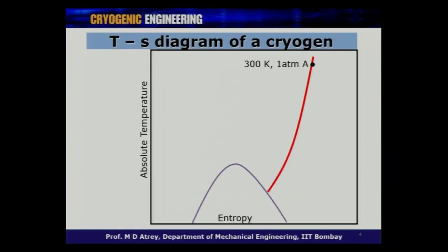Every gas can be represented on a temperature-entropy (T-S) diagram. On this diagram, the x-axis is entropy and the y-axis is temperature. You may have seen the pressure-enthalpy diagram, but the T-S diagram is what we normally deal with. Imagine you are at 300 Kelvin — room temperature, 27°C, 1 atmosphere. In order to liquefy any gas, you have to come inside the dome.